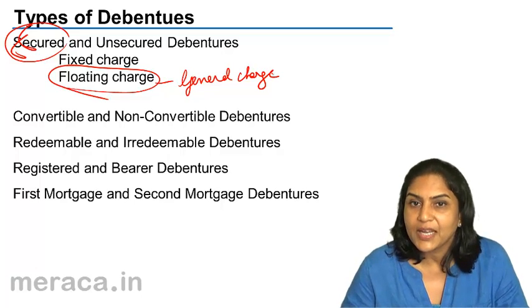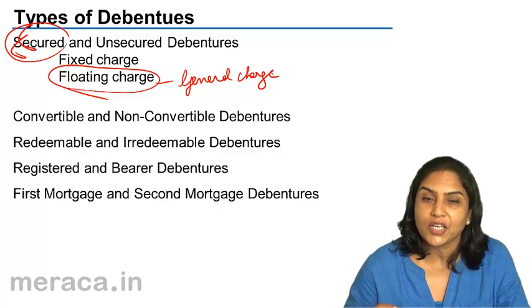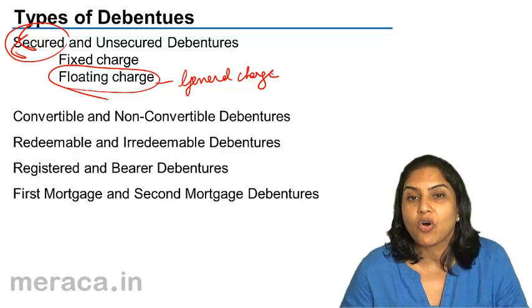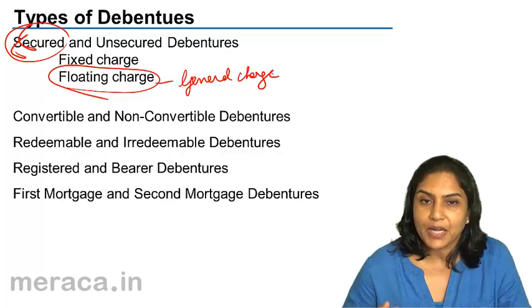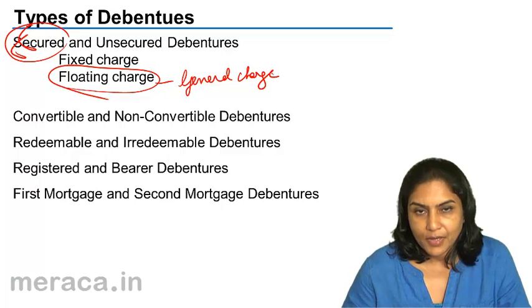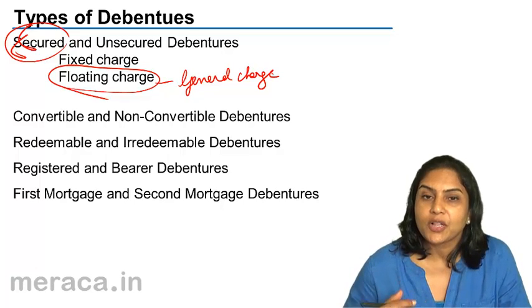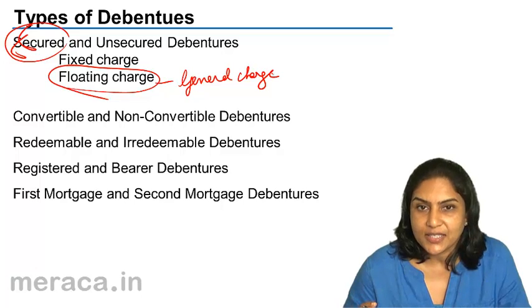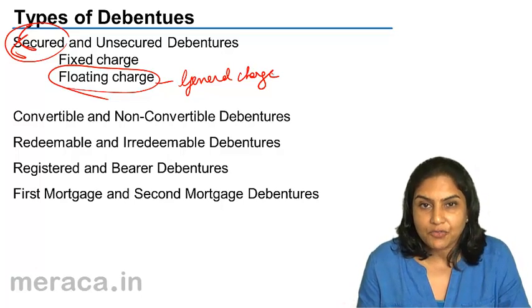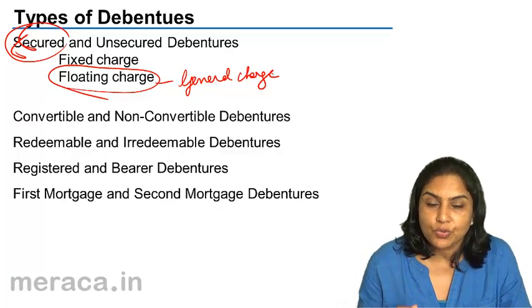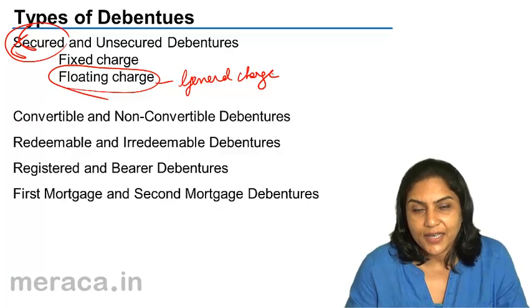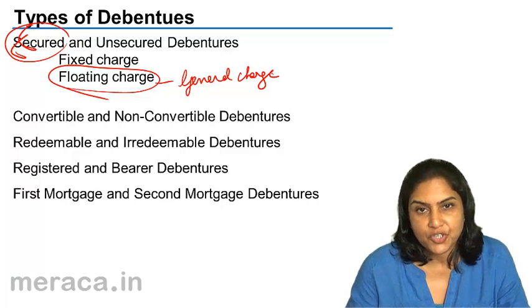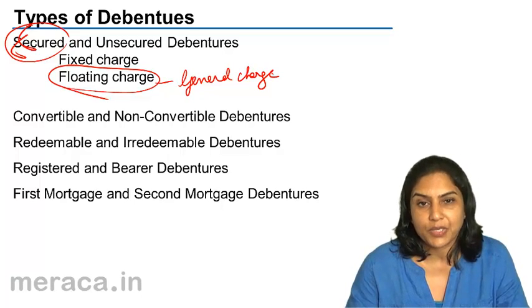Normally debentures have a floating charge or a general charge on all the assets of the company. This means if the company is to be liquidated, the proceeds from selling all the assets are first used to pay the debenture holders. Only thereafter are the other creditors paid, then the preference shareholders, and finally the equity shareholders.